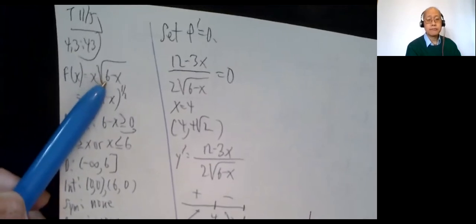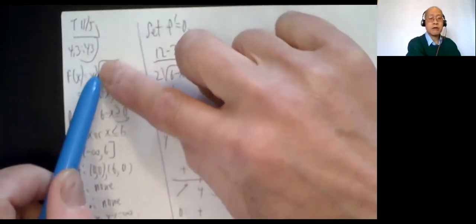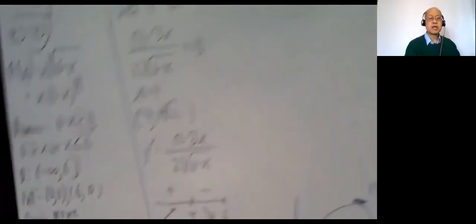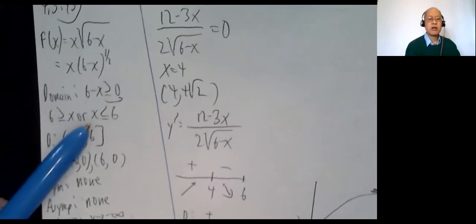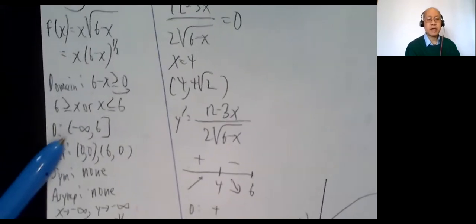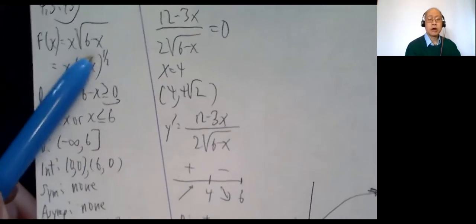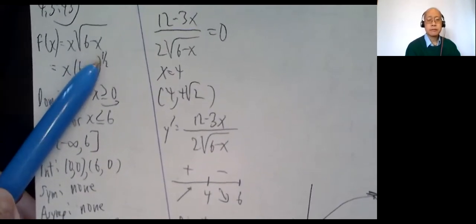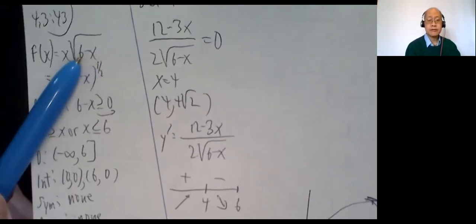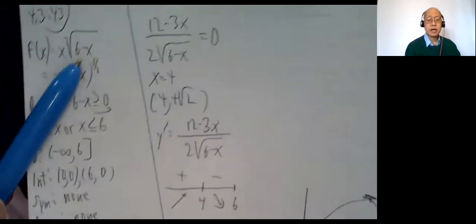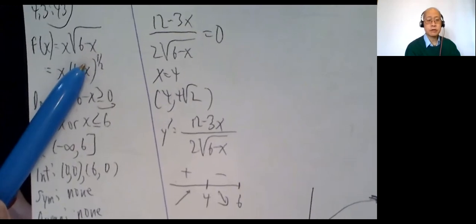I see a square root — you're not allowed to take the square root of negatives. So 6 minus x must be greater than or equal to 0, which means x is less than or equal to 6. So the domain is from negative infinity to 6, including 6. You can plug in 6, 5, 4, 3, 2, 1, 0, or any negative number, but not 6.1.